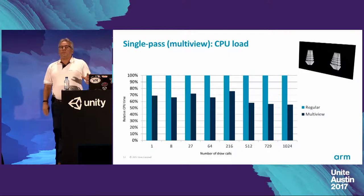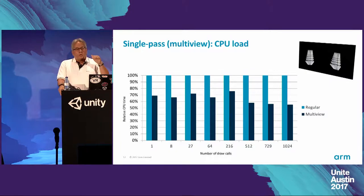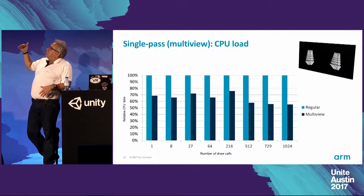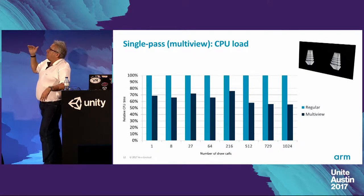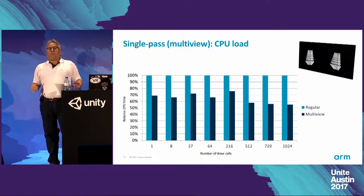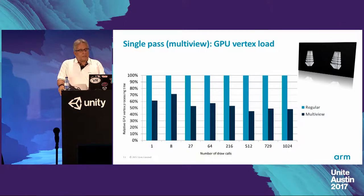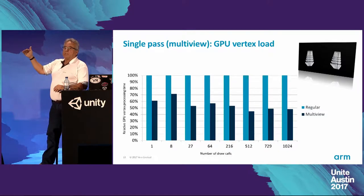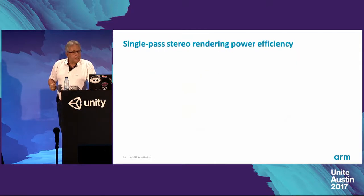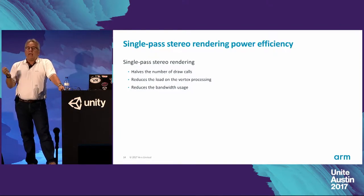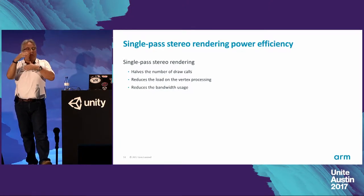Research at ARM comparing CPU load using single-pass vs. multi-pass stereo rendering shows that as the number of draw calls increases, the CPU load with single-pass stereo rendering is reduced almost to half — around 50 to 55 percent. This is significant because we are issuing fewer draw calls, relieving the CPU of half the task. The GPU vertex load shows a similar result: as draw calls increase, vertex processing load is reduced almost to half. Single-pass stereo rendering also reduces bandwidth usage because we are sending less data to the GPU.